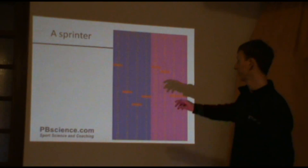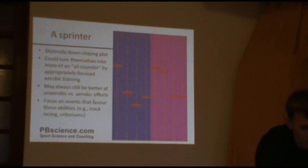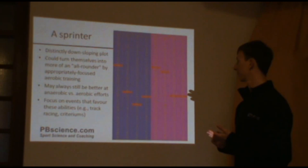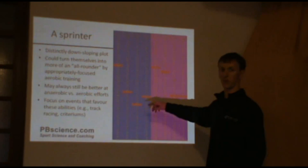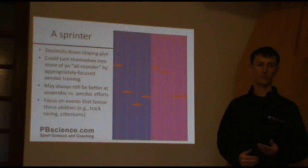And a sprinter again, so it's generally down-sloping. They've got the very high peak powers, but they're perhaps not so well-developed in these areas. And once again, these are the best efforts that they've performed up to now. As Helen spoke about yesterday, the high lactate threshold, lifting the endurance, is something that can be trained. So the sprinter could turn themselves into a more all-rounder, but they're probably always going to have that high peak power as a strength.